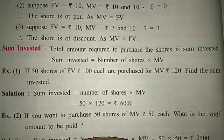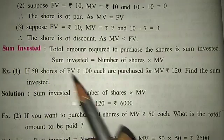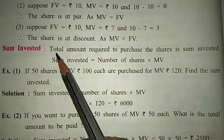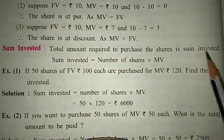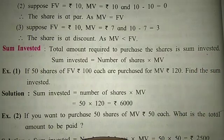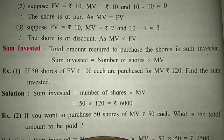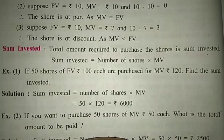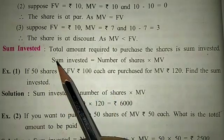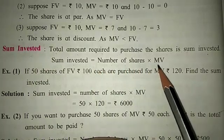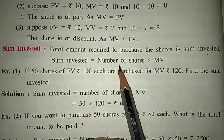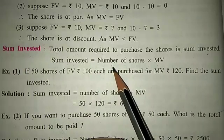On page number 100, let us see what is meant by sum invested. Sum invested is the total amount required to purchase the shares. The formula is: Sum Invested = Number of Shares × Market Value. This is a formula we must always remember.